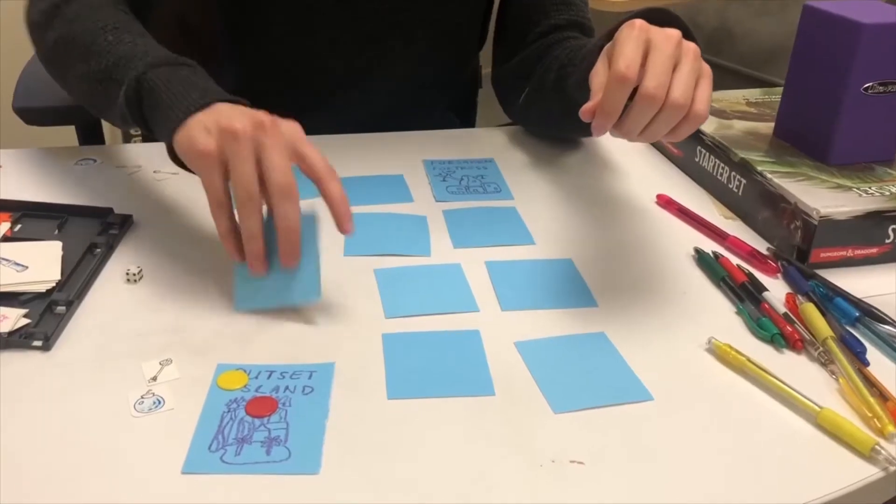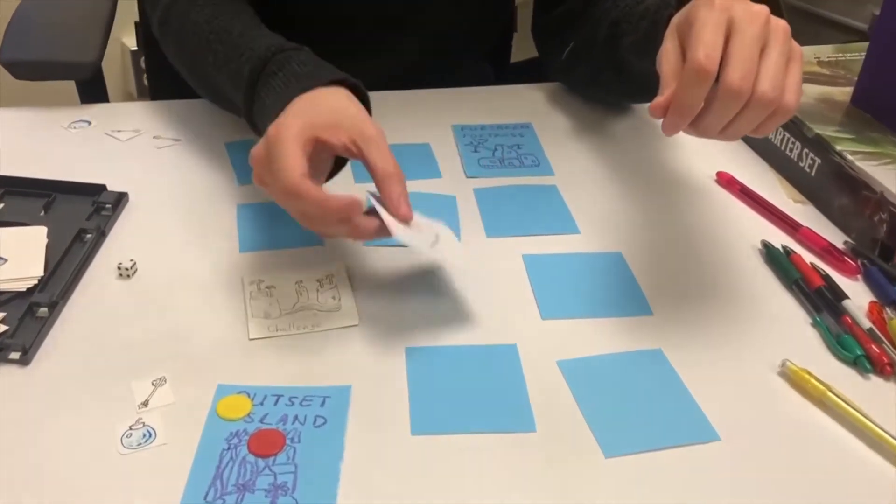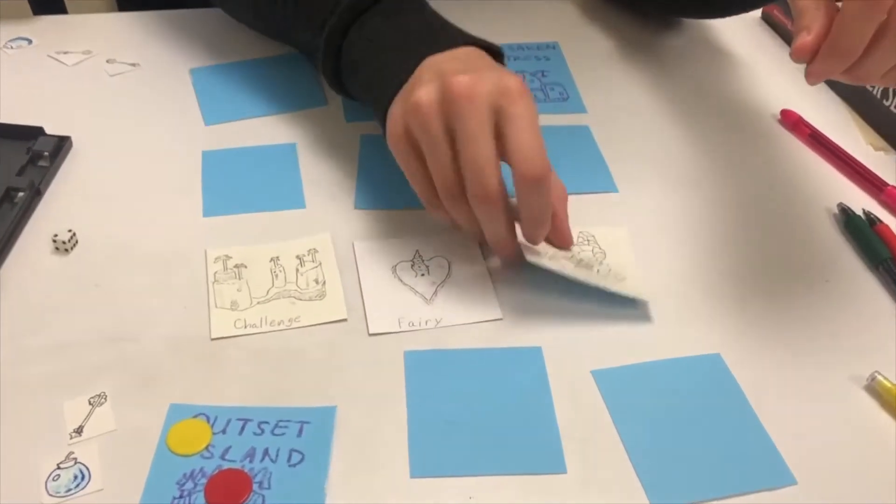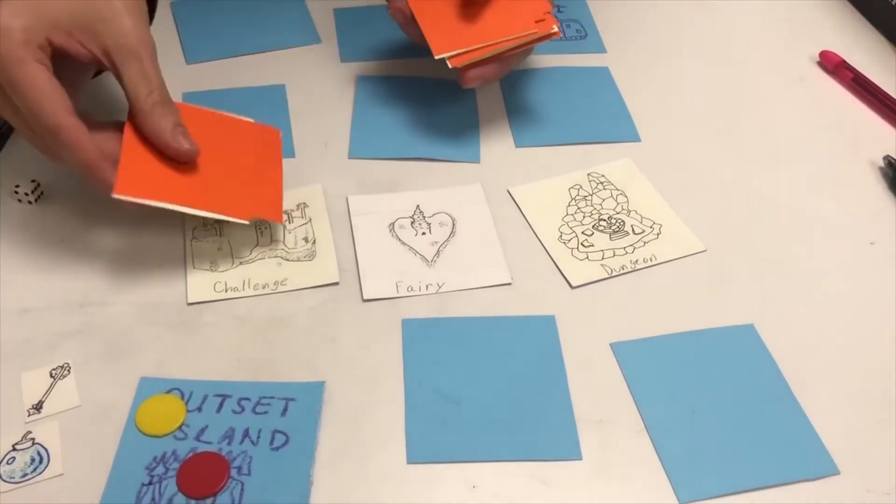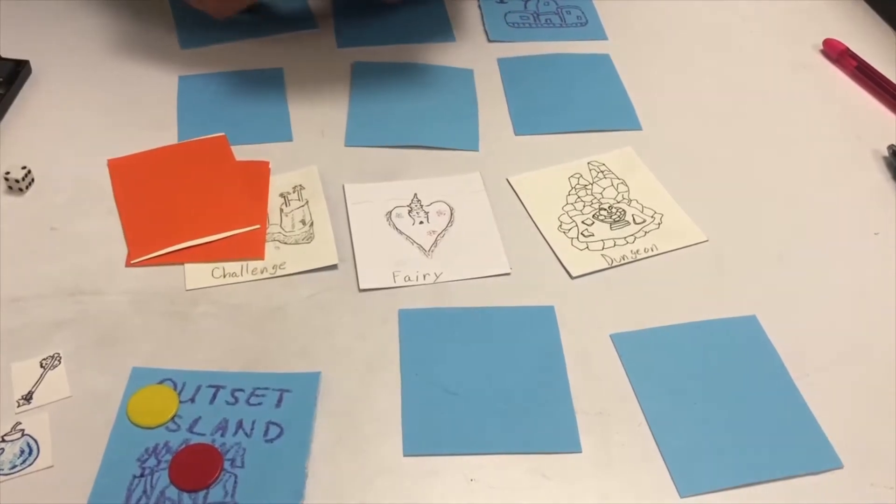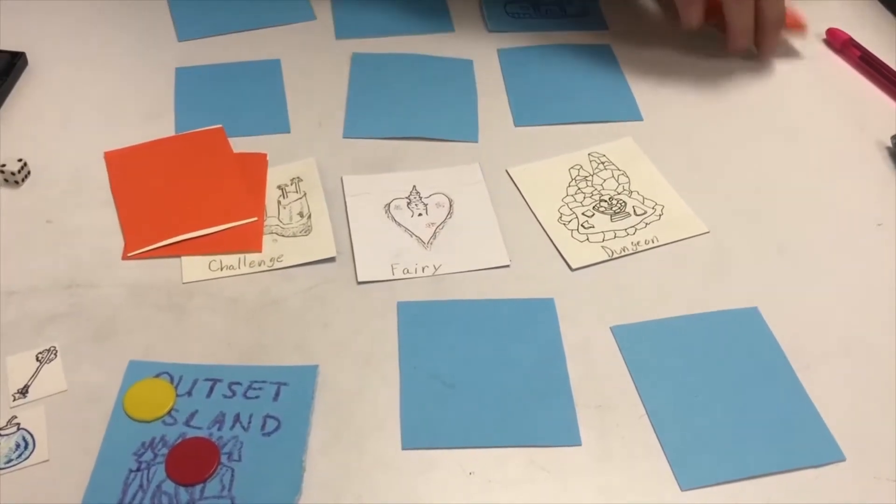There are three types of islands: Challenge Islands, Fairy Islands, and Dungeon Islands. When a challenge island is revealed, take two monster cards, the ones with the orange backs, and put them face down on the challenge island.